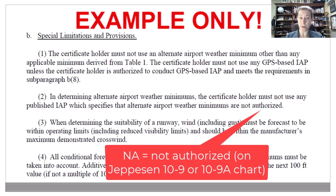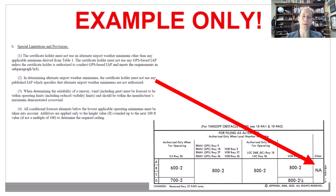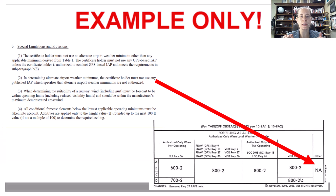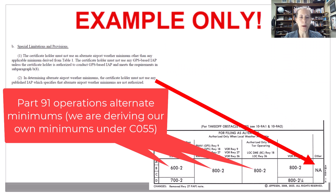Where do we find this? It is typically on the 10-9 or 10-9A page from Jeppesen. This airport has approaches listed and it says NA. If any approaches are listed with that NA on this part of the Jeppesen chart, you cannot use those approaches when doing derived alternate minimums.